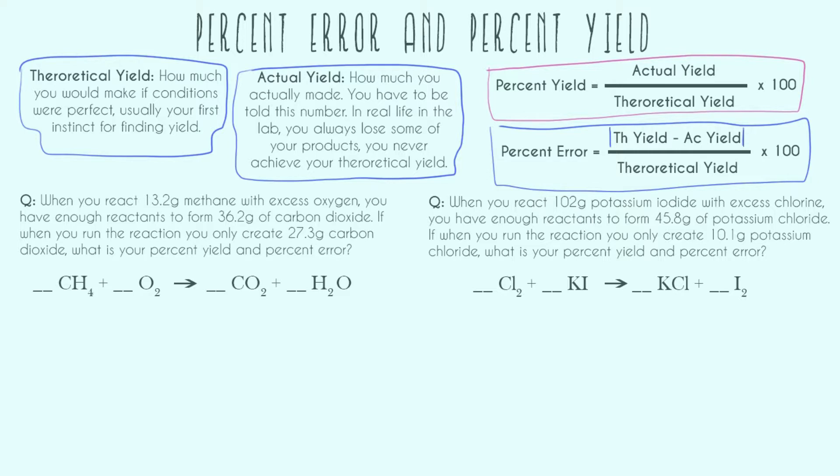Let's go ahead and do our first problem. When you react 13.2 grams methane with excess oxygen, you have enough reactants to form 36.2 grams of carbon dioxide. If when you run the reaction, you only create 27.3 grams carbon dioxide, what is your percent yield and percent error?